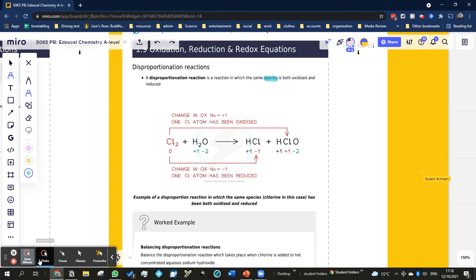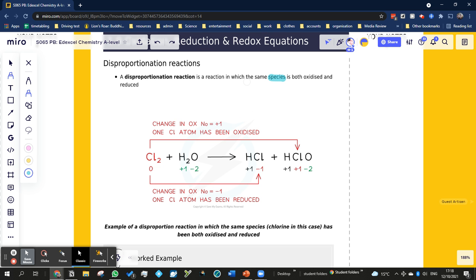Disproportionation reactions - it says that it's a reaction in which the same species, like chlorine, water, hydrochloric acid, or hydrogen chlorate, is oxidized and reduced. How can anything be oxidized and reduced?